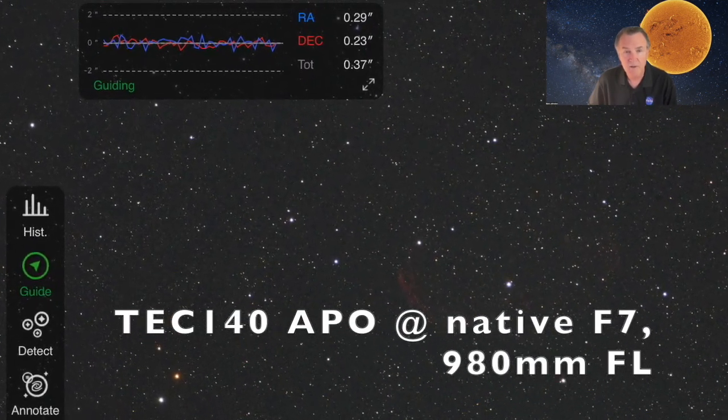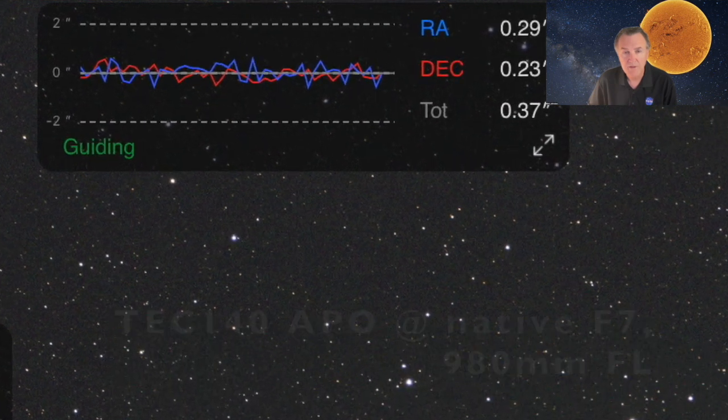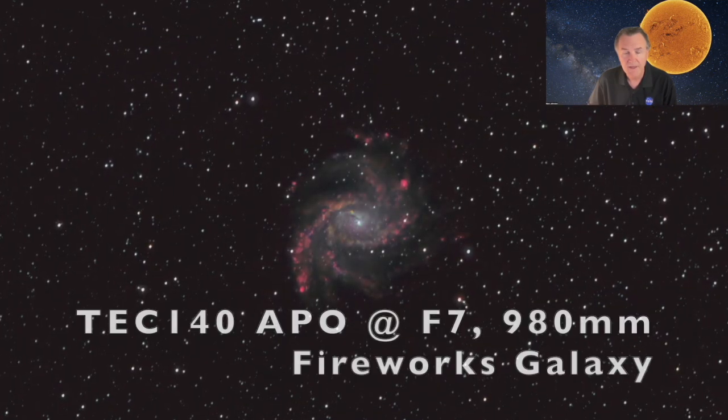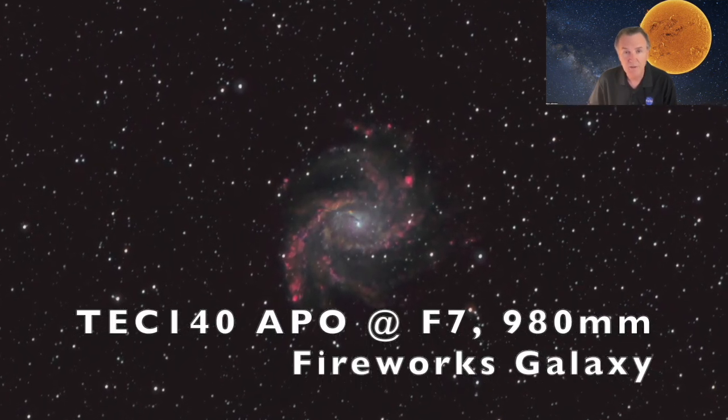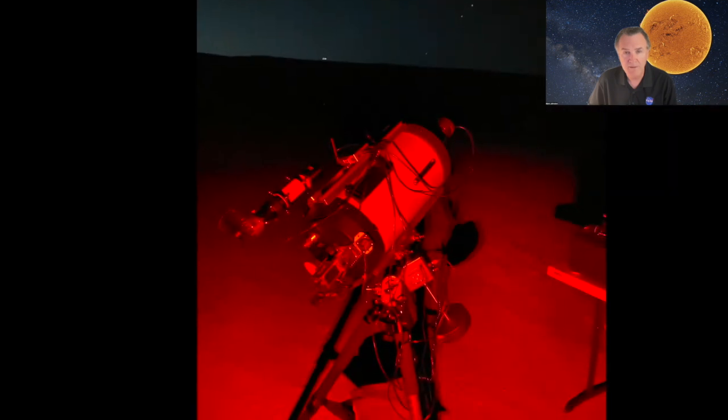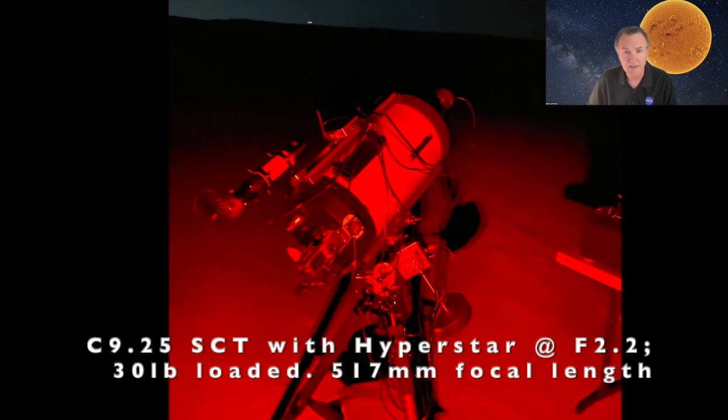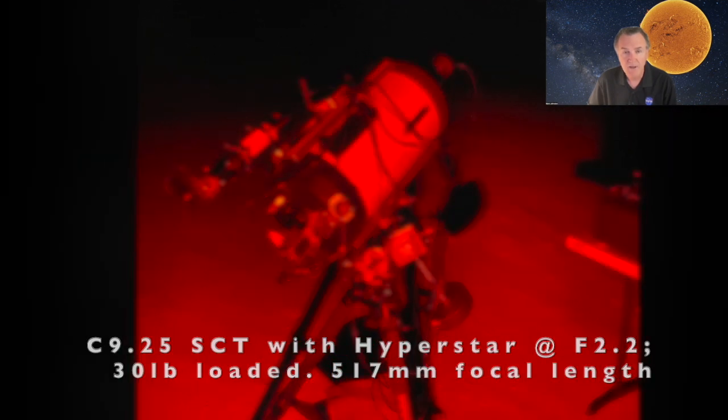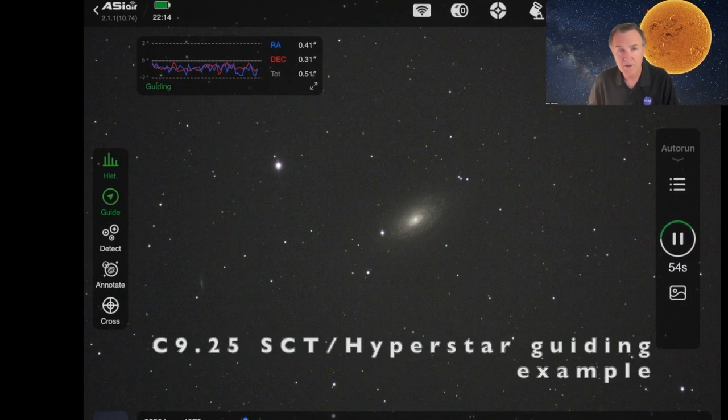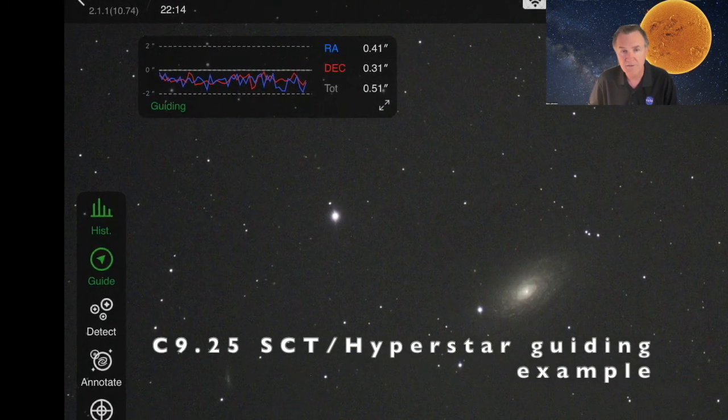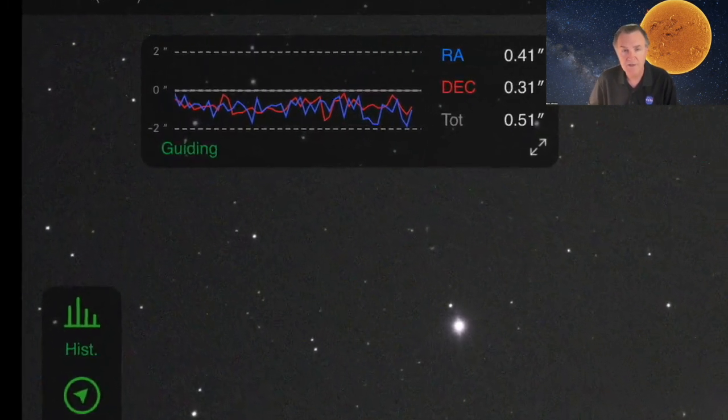To get good guiding, you want to balance the scope, use a stable tripod. If you're using their TC-40, I would suggest you load up the weight bag with about 25 pounds. This helps a lot in keeping the scope stable. I also would use a counterweight for larger telescopes, which I do with my TEC refractors and my Celestron C925.